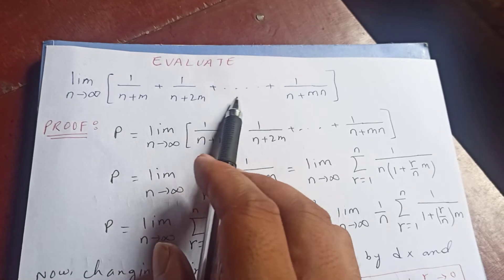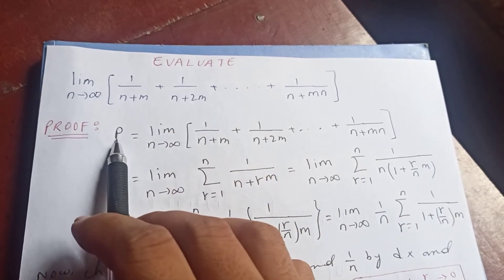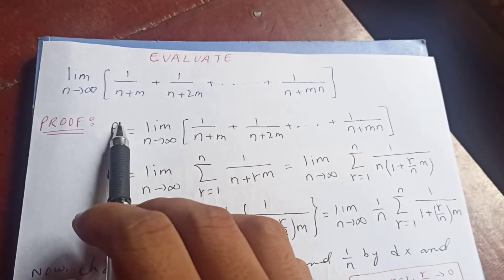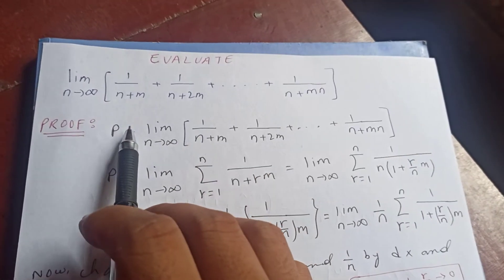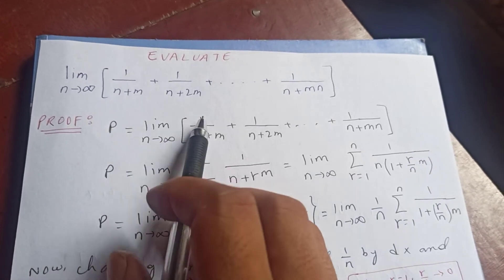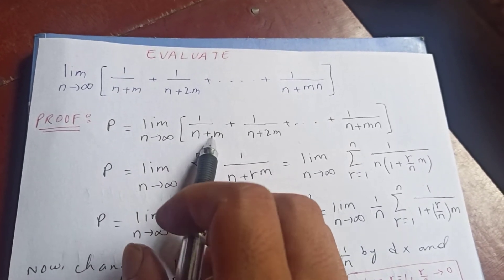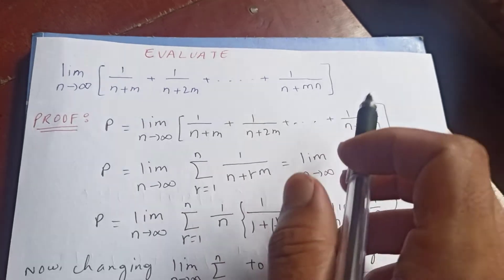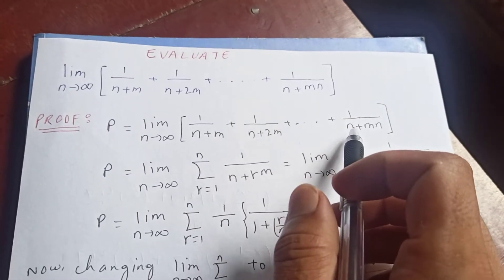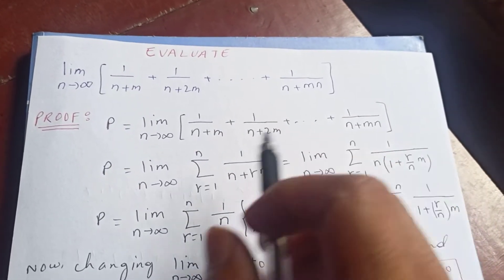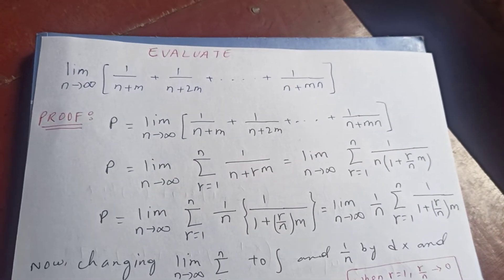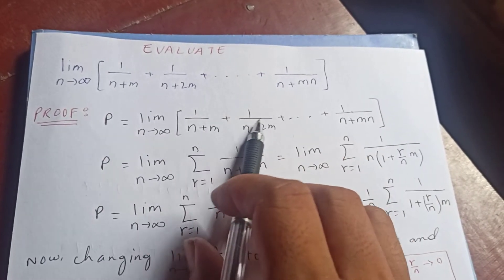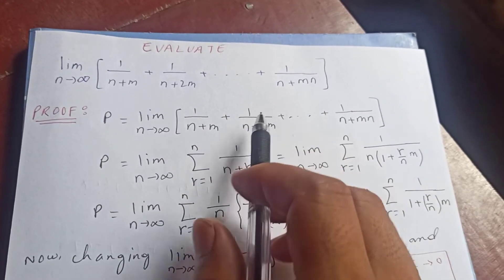Let's denote this limit as P. So P is equal to the limit as n tends to infinity of 1 over (n + m) plus 1 over (n + 2m) plus and so on plus 1 over (n + mn). We are going to write this using sigma notation.